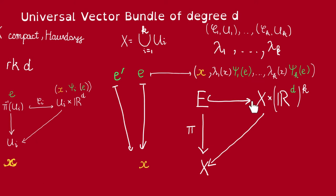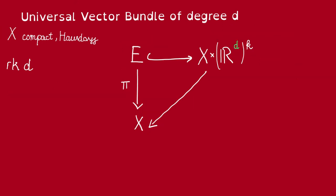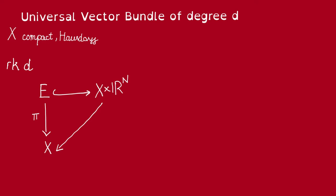And thus this map is in fact indeed an embedding of vector bundles. Thus every vector bundle over X is going to embed as a sub-bundle of some trivial bundle of X. Now every such embedding is going to induce a map from X to the Grassmannian, the d-Grassmannian of R^n, in such a way that this vector bundle is going to be the pullback of this canonical bundle under this map.